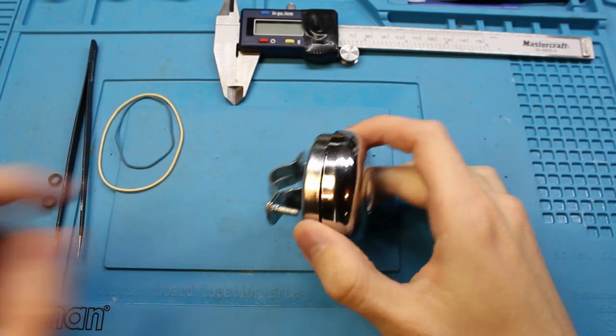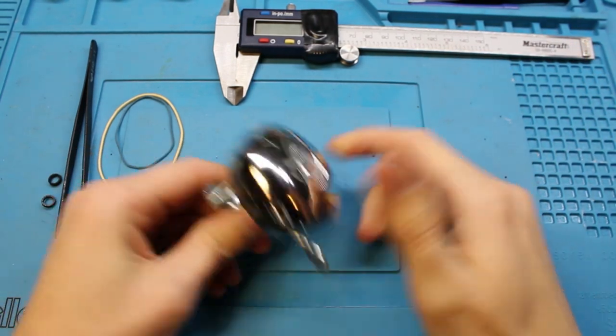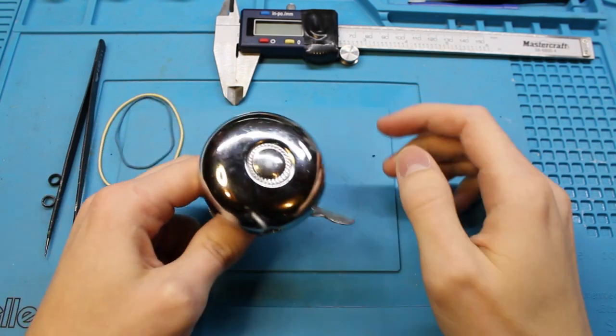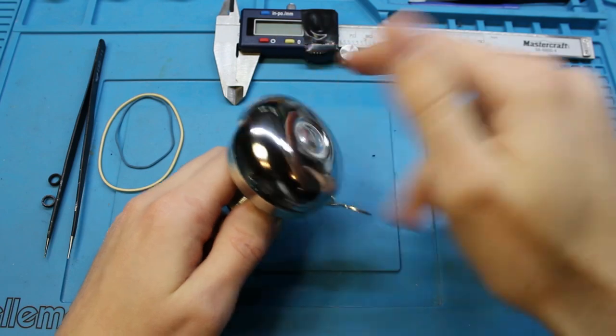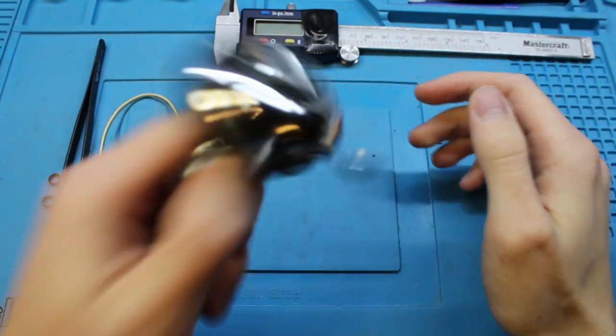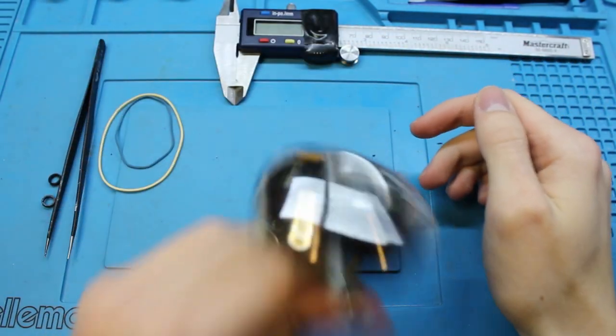This will probably only work for this particular style of bell, but what this is supposed to mitigate is if you have a bicycle bell that will randomly ring as you're going down the street. I can't seem to get it to do it right now, but it will do it. It'll randomly ring as you're bumping along on the street.